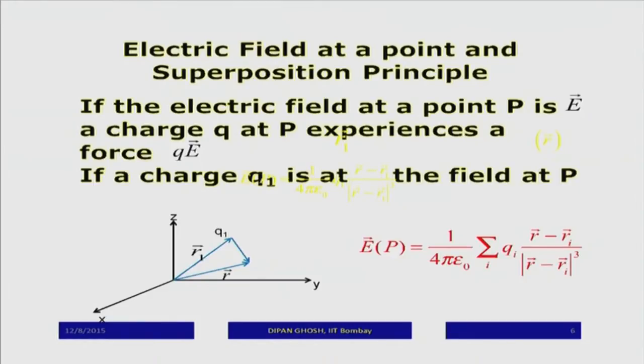I start with the building blocks. The first building block is the existence of Coulomb's law, which is of course an axiom. The second axiom is: suppose you are looking to calculate the electric field at a point due to multiple charges — how do you find the effect at that point due to the presence of all of them? Remember, each one of them has their own electric field.